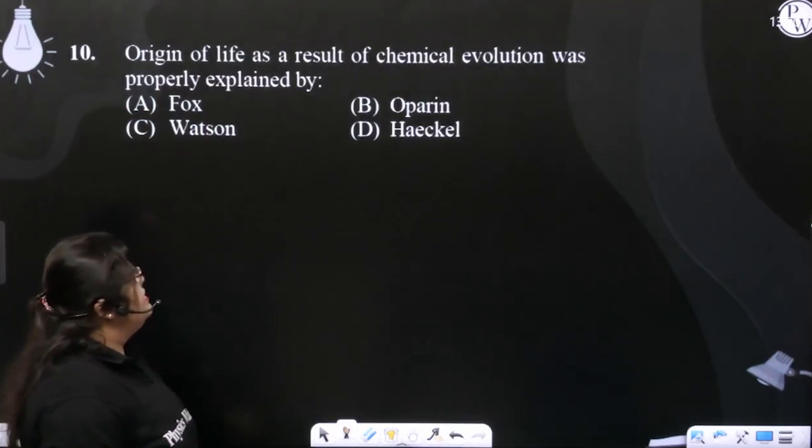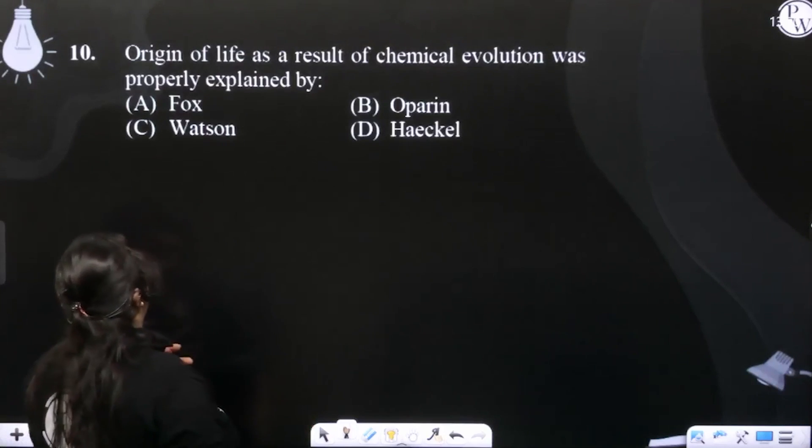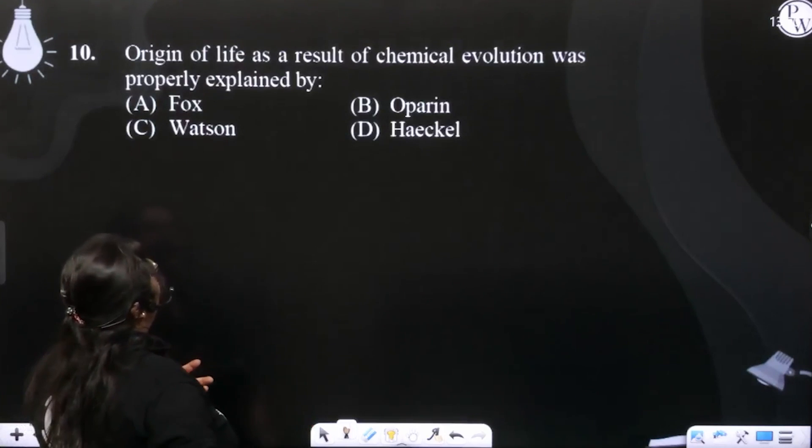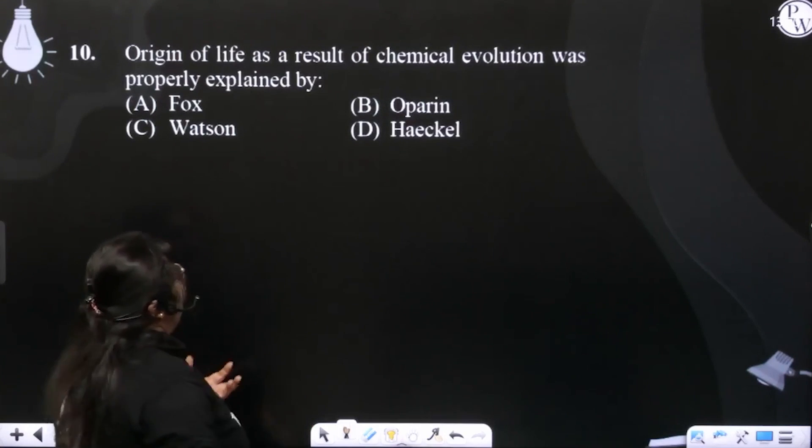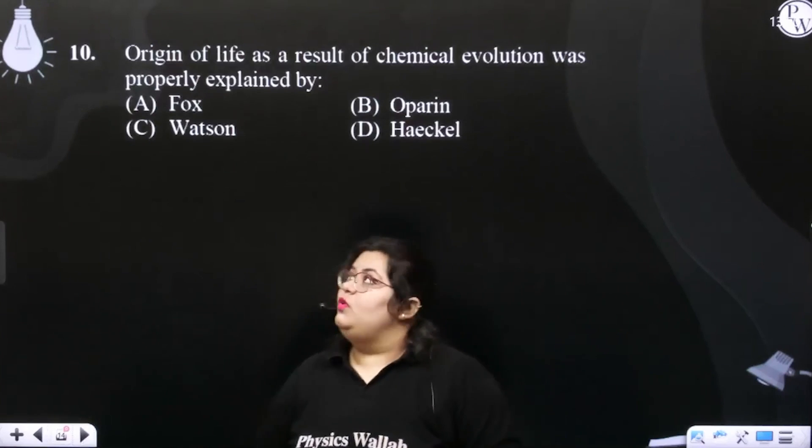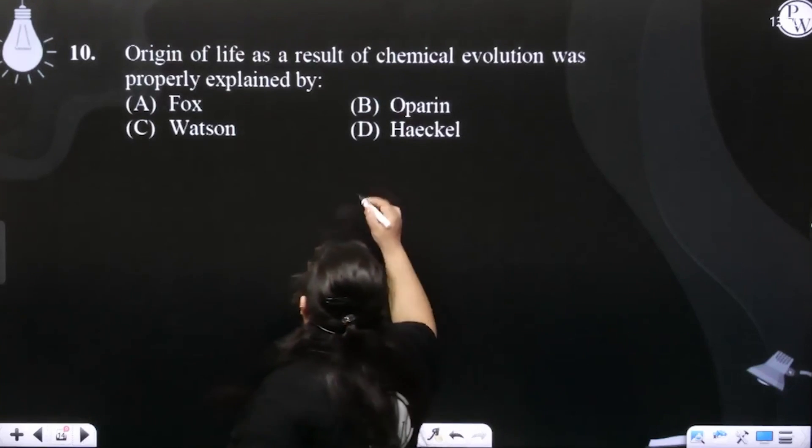Question 10 asks: Origin of life as a result of chemical evolution was properly explained by whom? A very easy question. Who gave the chemical theory of chemical evolution?